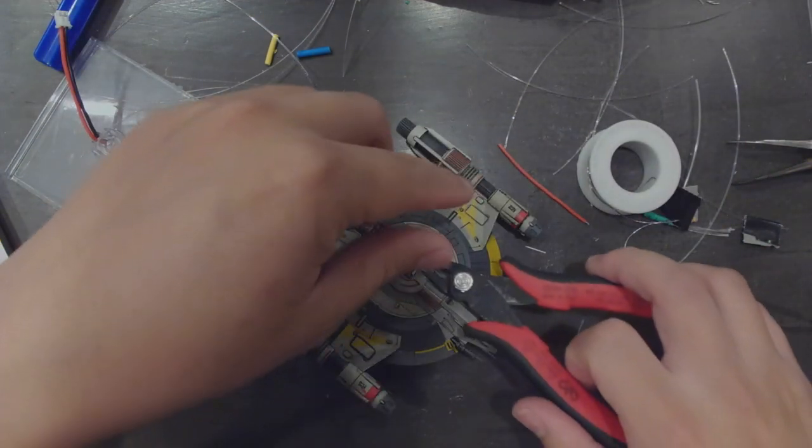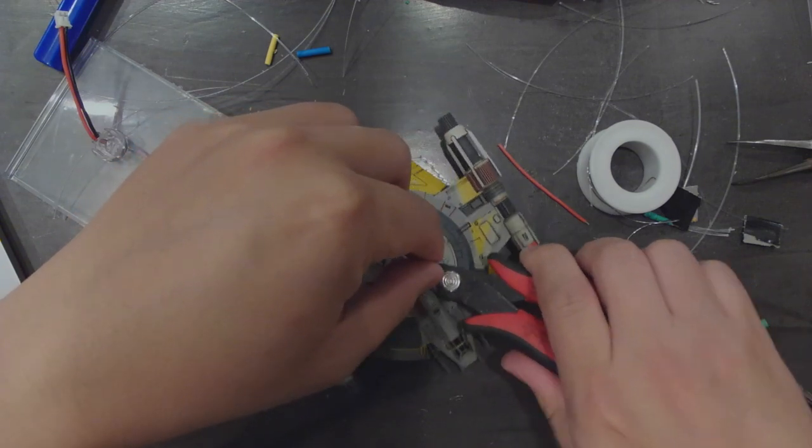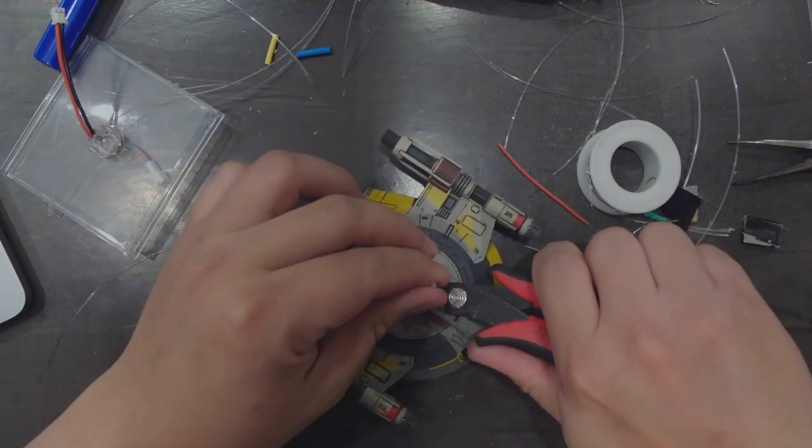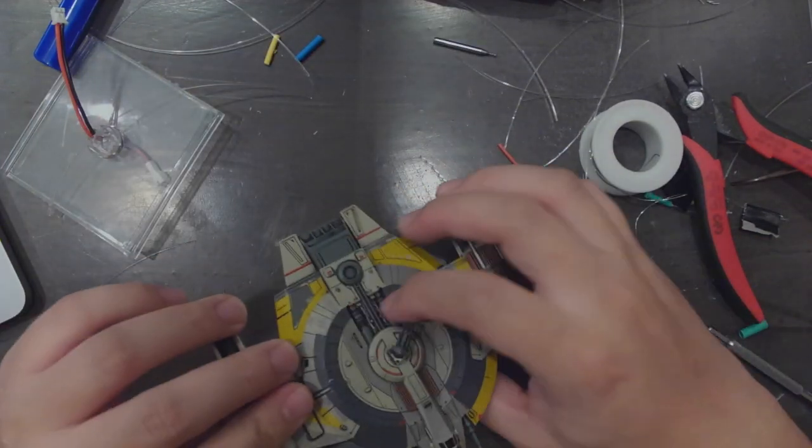Once it's dry I can use flush cutters to cut away the rest of the drill bit and just leave the turret attached to the button. The plastic button actually rotates inside of the socket so don't be surprised if the turret can rotate.